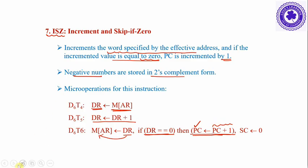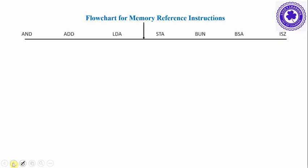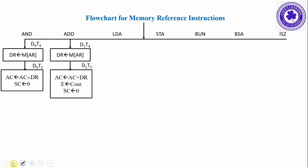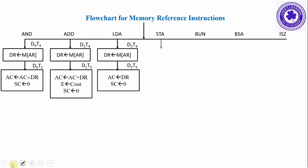These are the seven memory reference instructions. Now we see the flowchart. All are executed starting at timing signal T4. AND: at T4 read the memory word into the data register; at T5 perform the AND operation, then set sequence to zero. ADD: read from memory into data register, perform addition (carry stored in E), then set sequence to zero. Load accumulator: read from memory into data register, then store from data register into accumulator. Store accumulator: store the accumulator value into memory at the address in the address register.